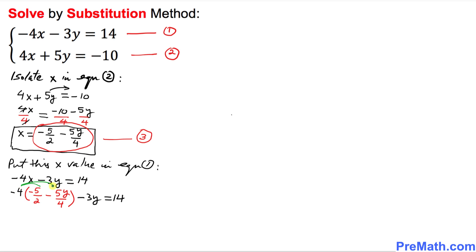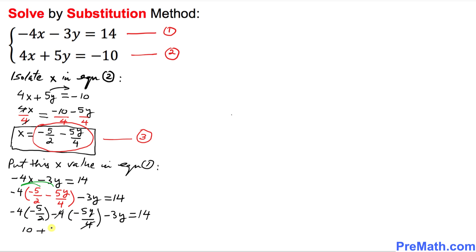Now we distribute: negative 4 times negative 5 over 2 gives us positive 10 over 2, which is 5; then negative 4 times negative 5y over 4 — the 4s cancel and negatives make a positive — giving us positive 5y. Then we still have minus 3y equals 14.